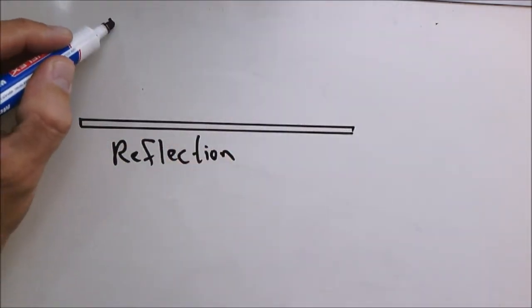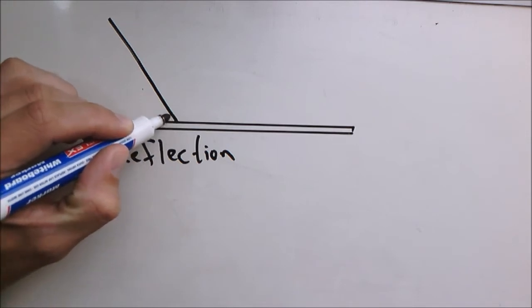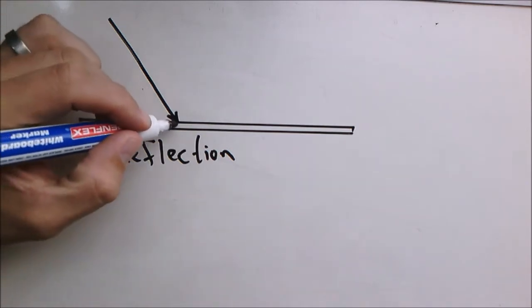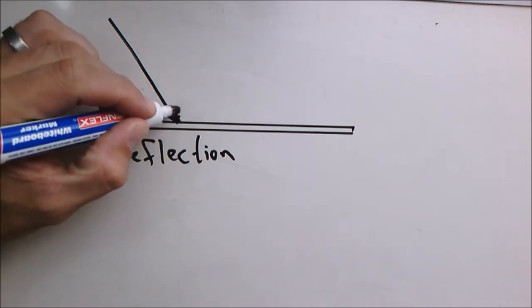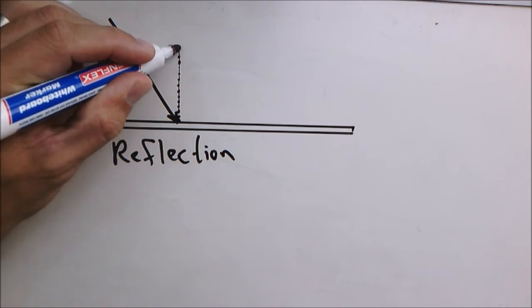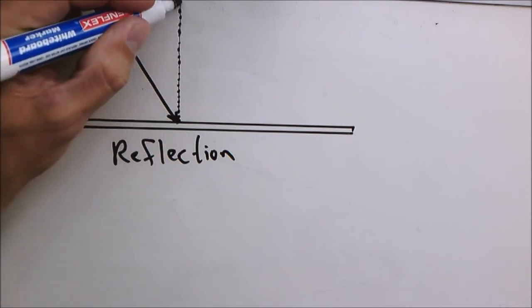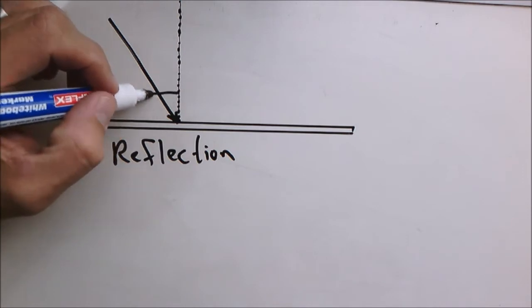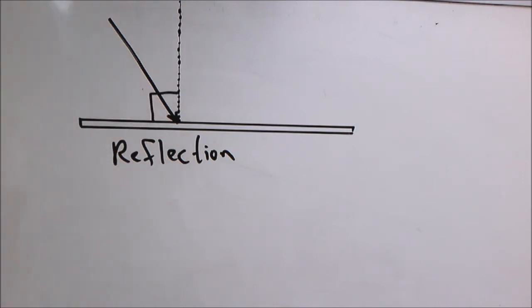So here you have your incident ray from a light source, and then remember I referred to the normal. This is the normal that is always at a right angle to the surface.